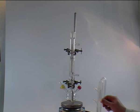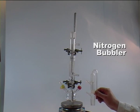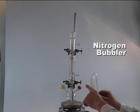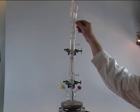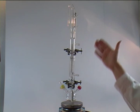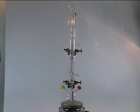The final piece of equipment is our nitrogen bubbler, where we have a nitrogen inlet at the bottom and a nitrogen outlet at the top. We put that on top of the reflux condenser. And in this way, this whole apparatus setup is sealed airtight.